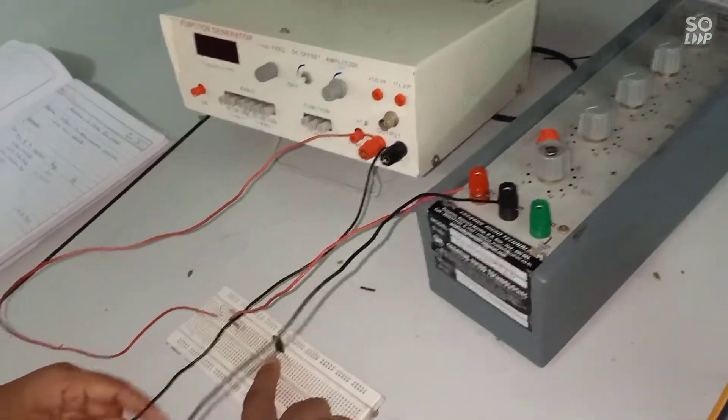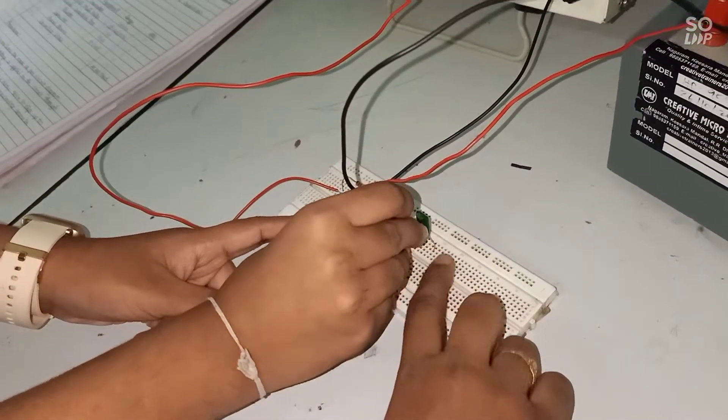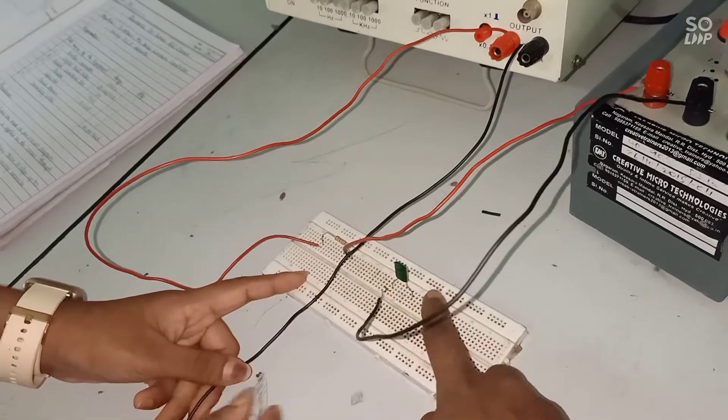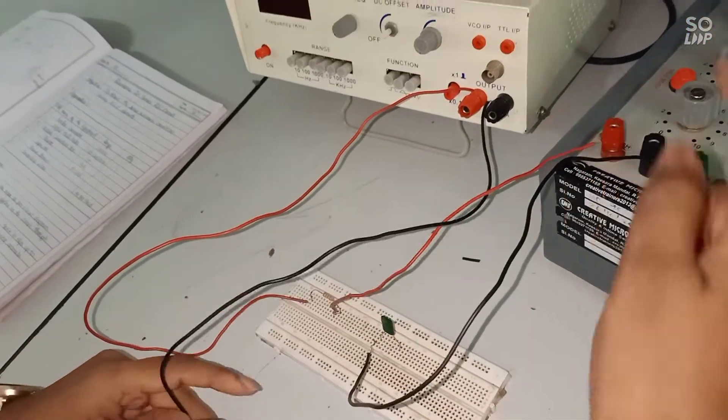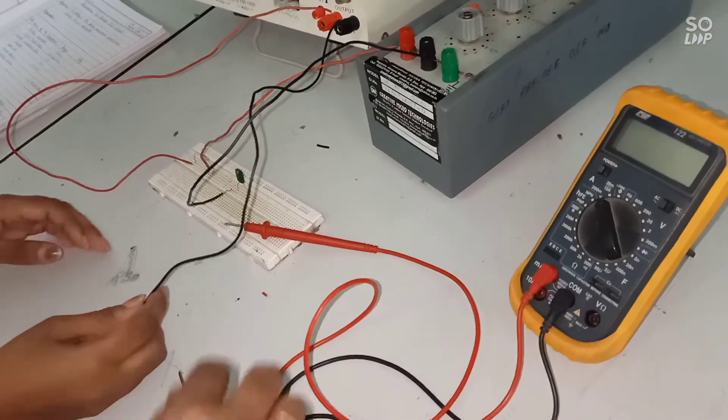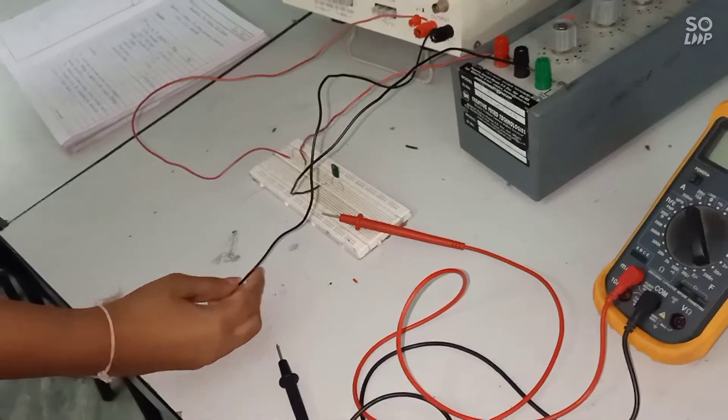Then the negative end of the inductor is connected to positive end of capacitor. Here the capacitor used is 0.1uF. Then negative end of the capacitor is connected to the ammeter positive end, and the negative end is connected to the supply of the function generator.